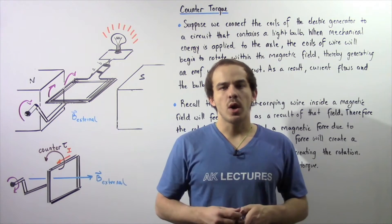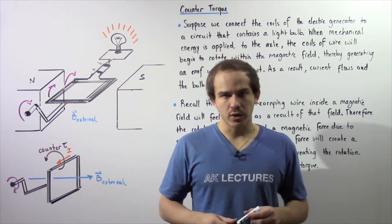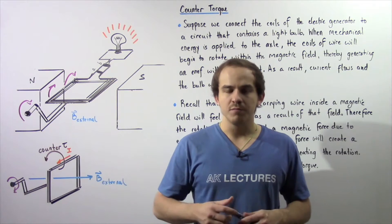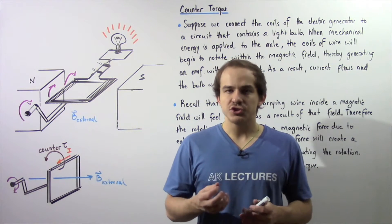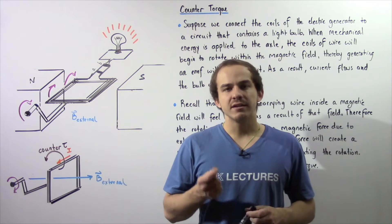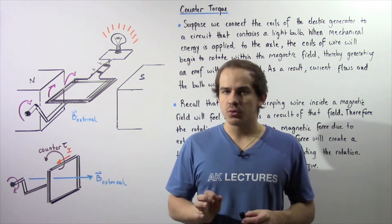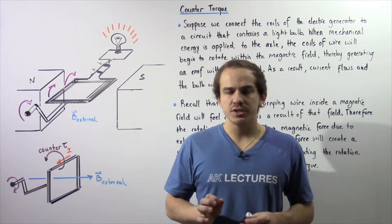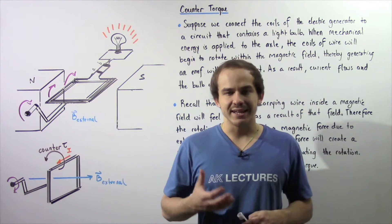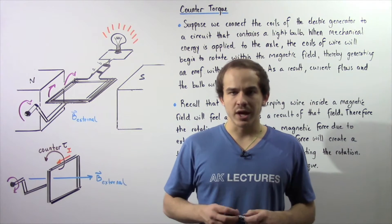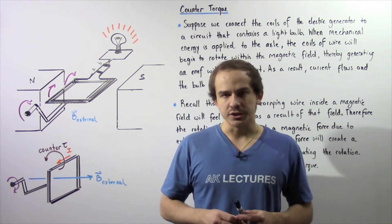Let's continue our discussion of electric AC generators. Recall that an electric AC generator essentially transforms mechanical energy into electric energy. In other words, it uses the principle of electromagnetic induction to generate an alternating electric current.